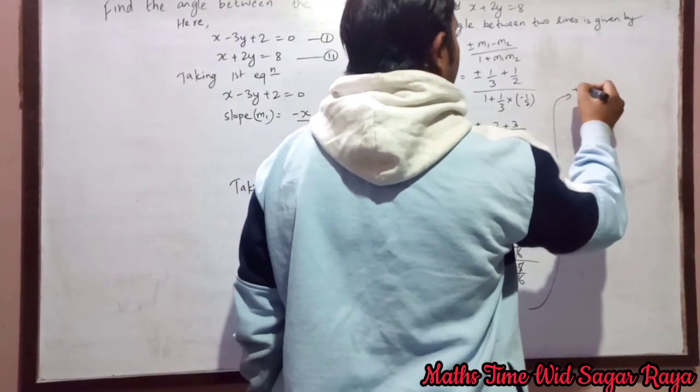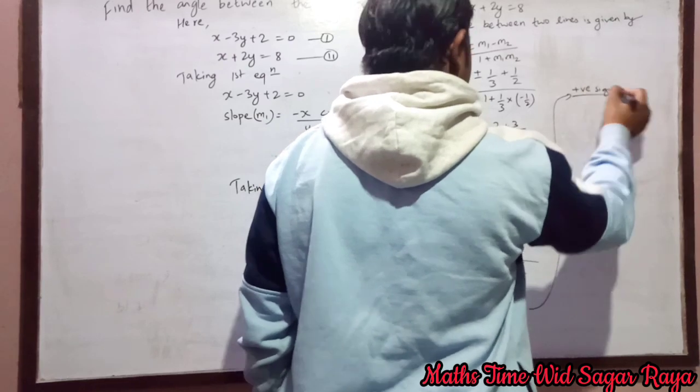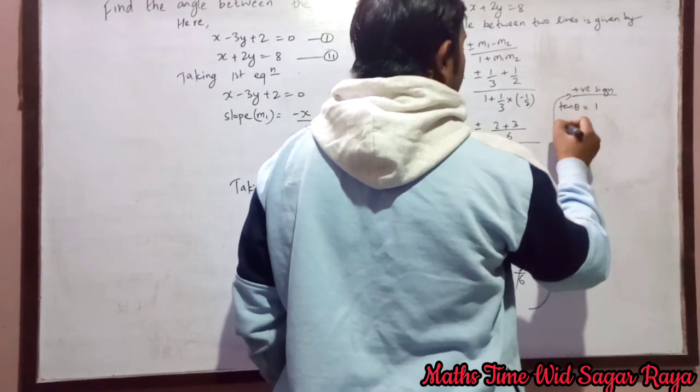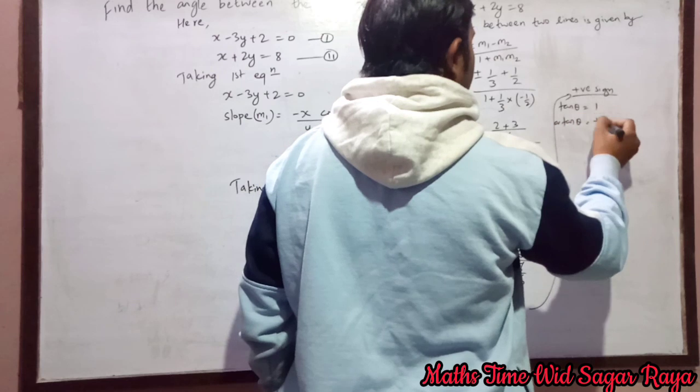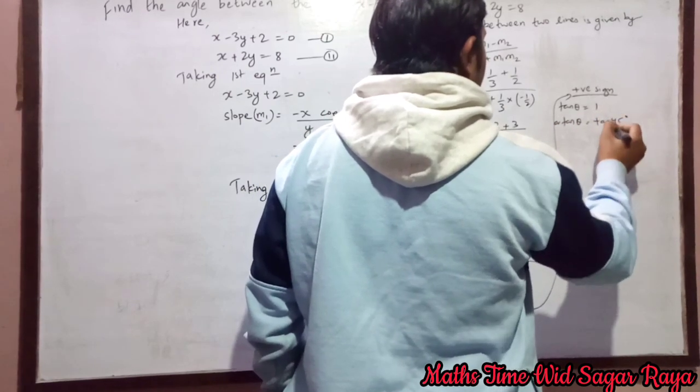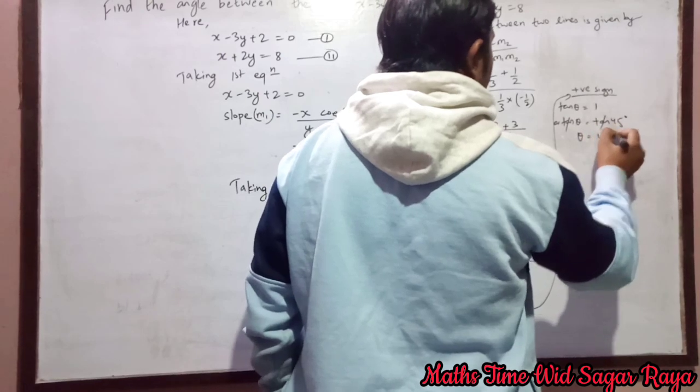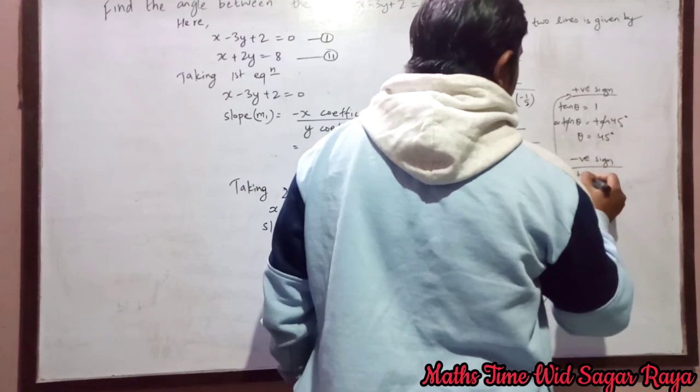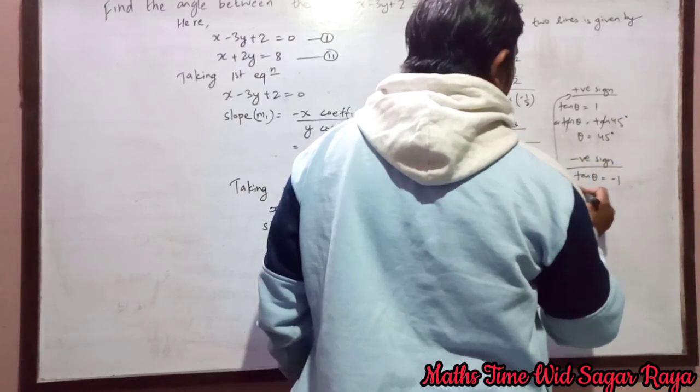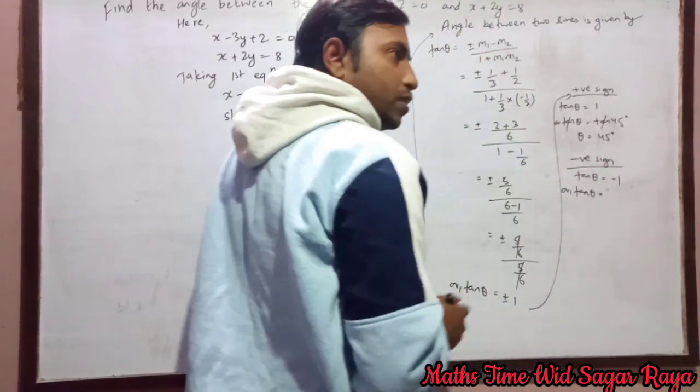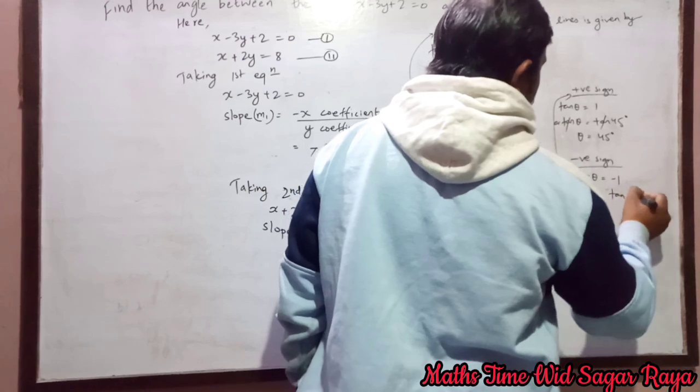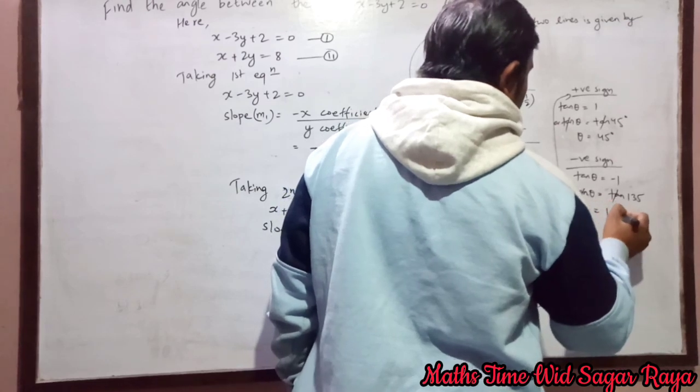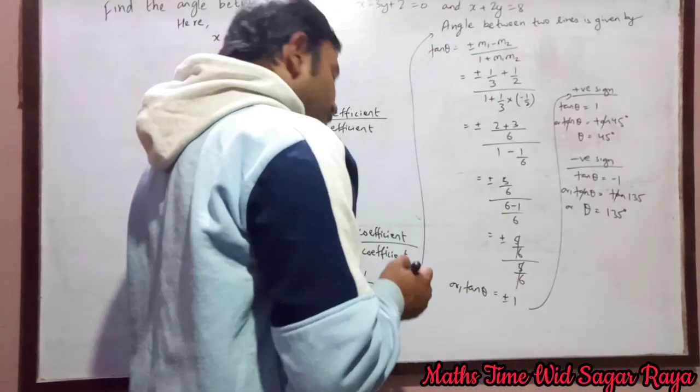After this, if we take positive sign then tan θ will be 1, or we can write tan θ equals tan 45 degrees, so tan and tan cancel, θ equals 45 degrees. Similarly if we take negative sign then tan θ will be minus 1, which equals tan 135 degrees, so θ equals 135 degrees. So this is the required solution.